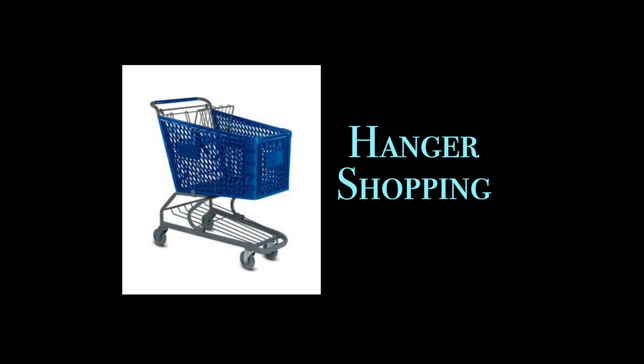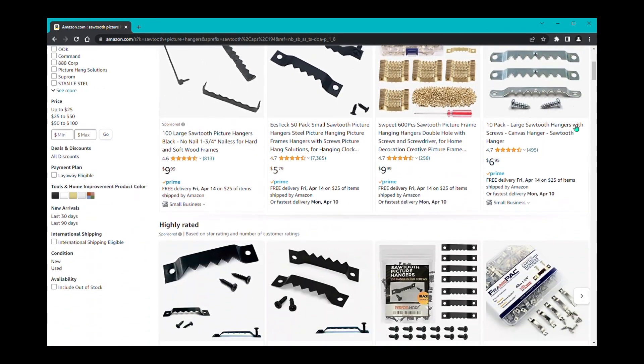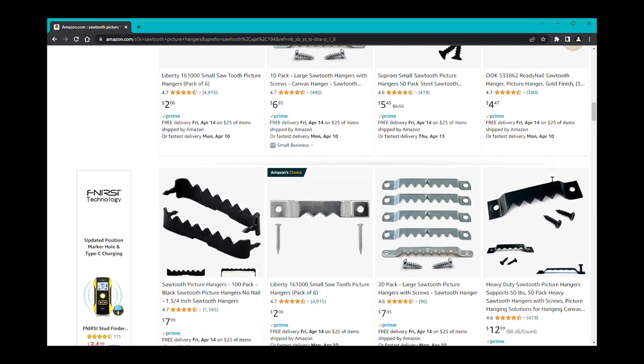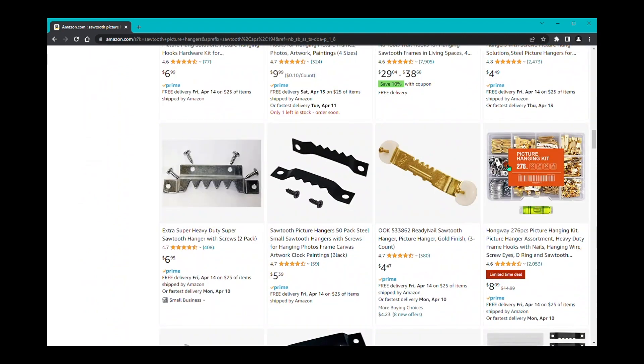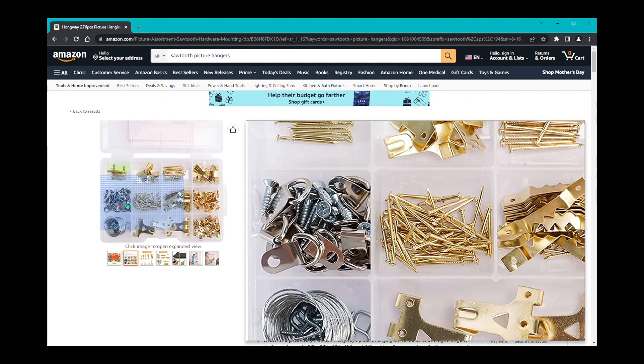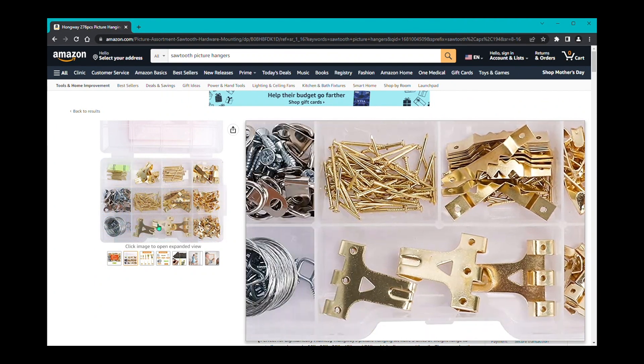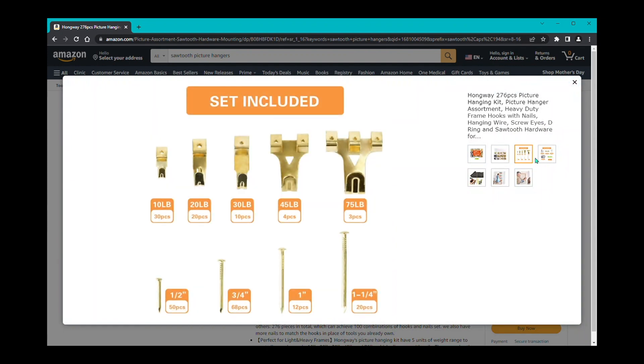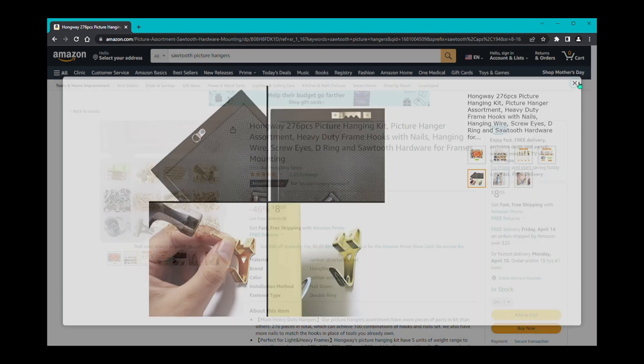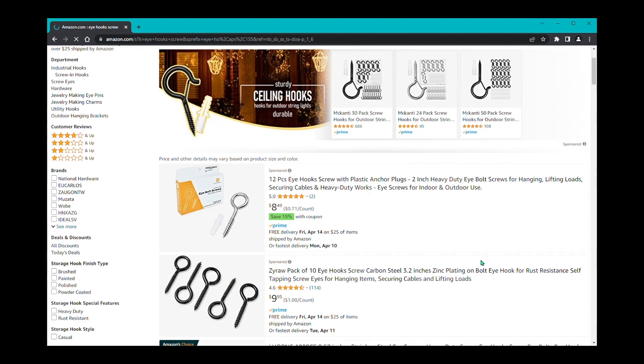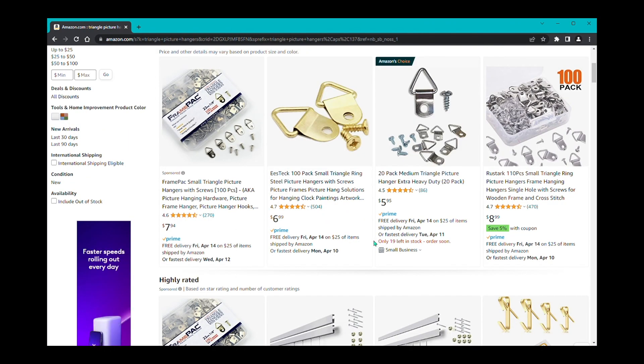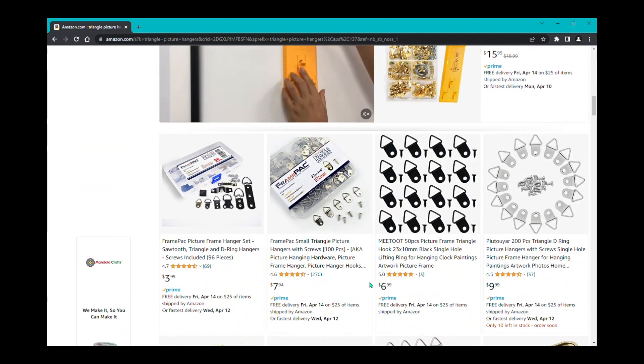All of the different hangers can be found in craft stores, home improvement stores like Lowe's and Home Depot, numerous online vendors including Amazon. There are kits that are available. These kits are great because they contain everything you need. They have enough variety to cover a wide range of weights. Some of them will go up to 50 or even 75 pounds. Generally, you can get a pack of 100 hangers for around 8 US dollars. I will put a link to the products in the video description below.